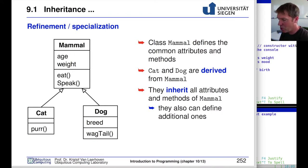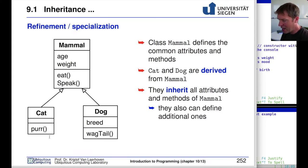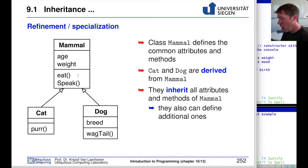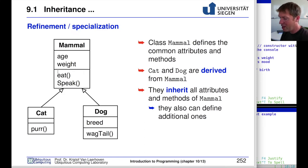We might have a class called mammal that implements everything to do with age, weight, speaking, and eating. We can then derive from this base class several other classes, like cat and dog, with their own specific functions or data members. For example, a cat can do everything a mammal can do and additionally purr. A dog can do everything a mammal can do but also has an extra data member for its breed and can wag its tail.